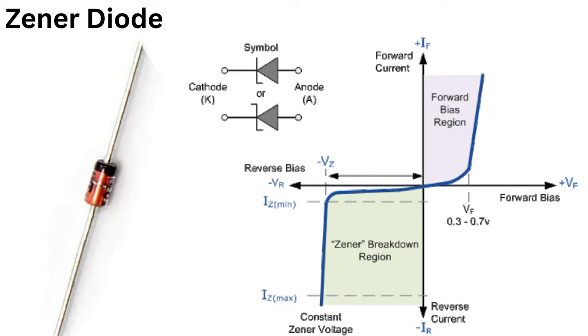A Zener diode is a type of diode that is designed to operate in the reverse breakdown region, also known as the Zener region. This allows the diode to maintain a constant voltage across it, regardless of the current flowing through it.